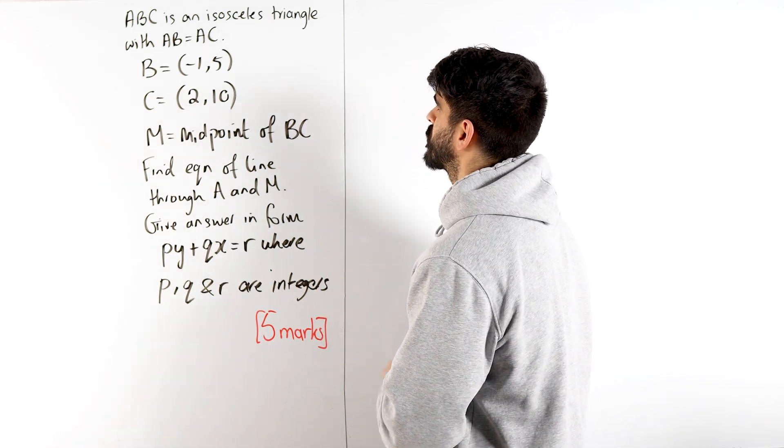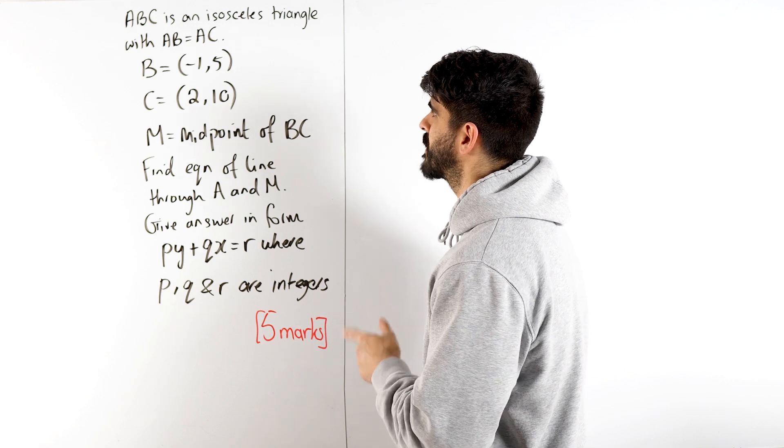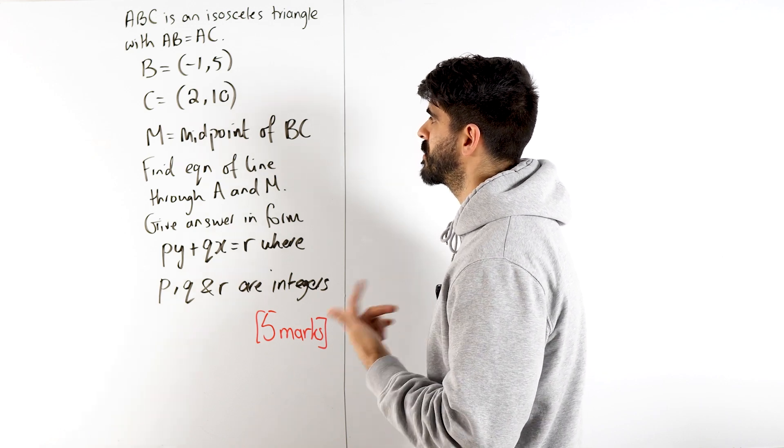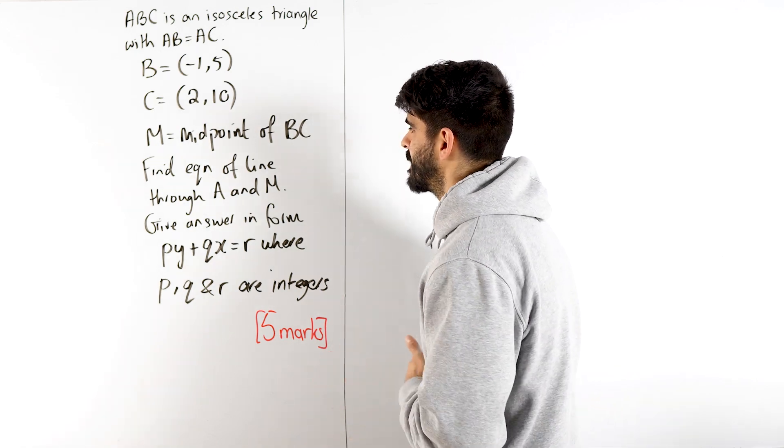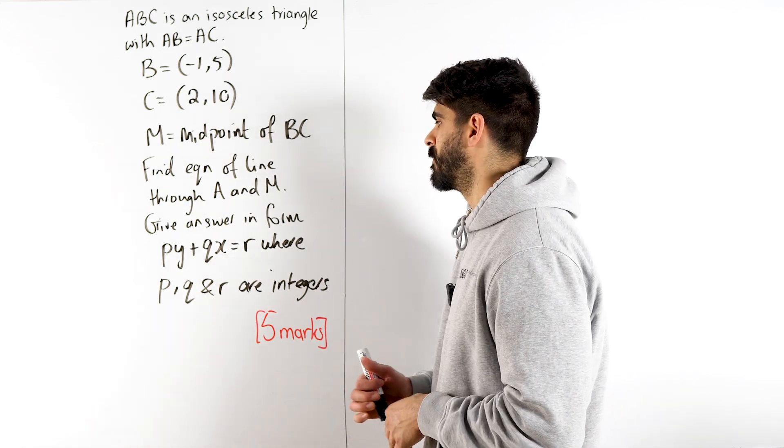It says ABC is an isosceles triangle with AB is AC. B has those coordinates, C has those coordinates, M is the midpoint of BC. Find the equation of the line through A and M. I'll give you an answer in the form of that.